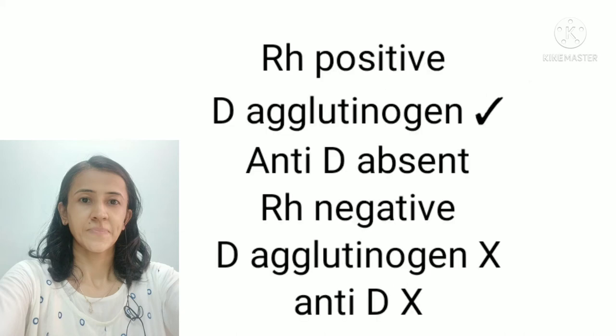How? Let us discuss. In the RH system, if the blood group is RH positive, D agglutinogen is present, and when D agglutinogen is present, anti-D must be absent — according to the first part of the law, when agglutinogen is present, corresponding agglutinin must be absent. So this first part is followed. Now, if the person is RH negative, D agglutinogen is absent, but along with that, anti-D are also absent. According to the law, if D agglutinogen is absent, anti-D must be present in the serum, but here anti-D are also absent in the serum. So the second part of the law is not followed.